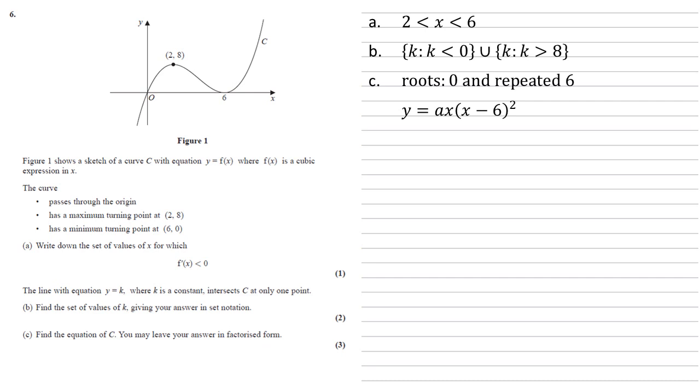We've got three points that we know this graph goes through: the origin, (2,8) and (6,0). But if we put the origin or (6,0) into these, we'd get zeros left and right. It wouldn't give us the a because the zeros would just cancel everything out. So we need to put our other point, (2,8), into this equation.